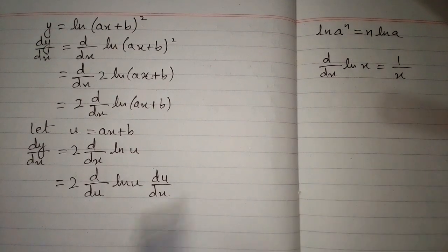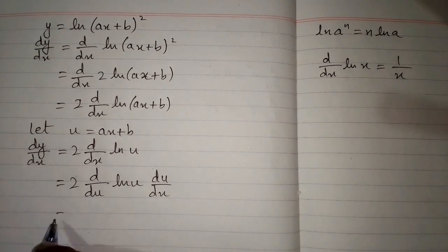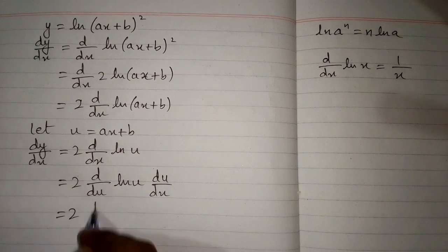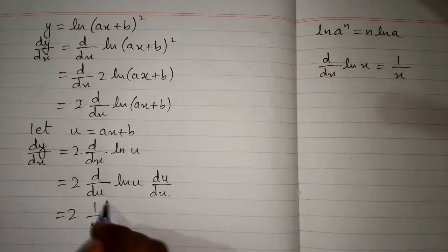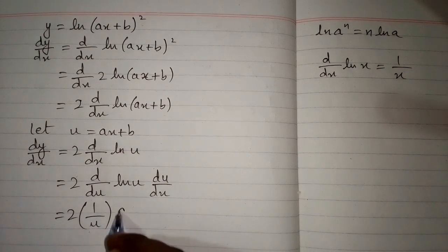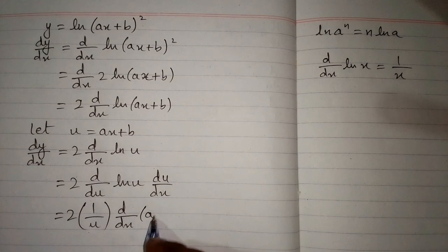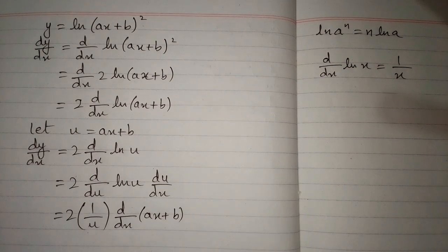Now we can apply the formula: the derivative of ln(u) is 1 upon u, multiplied by the derivative of u, which is ax+b.